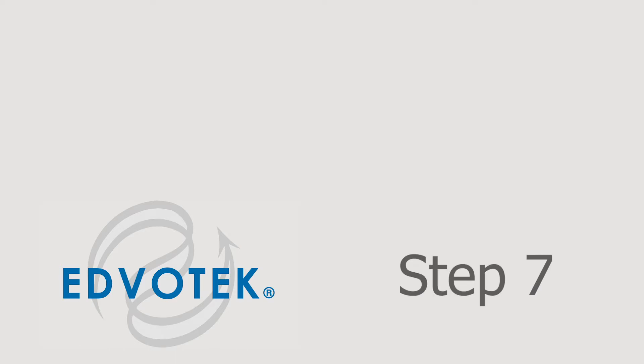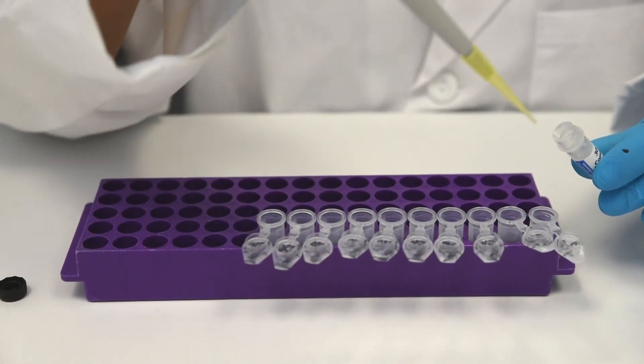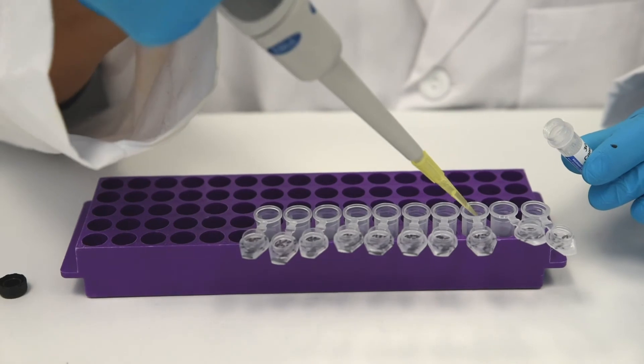Step seven, dispense 50 microliters of 50% glycerol into 10 microcentrifuge tubes.